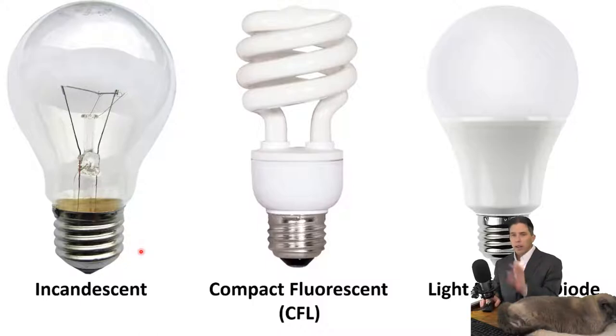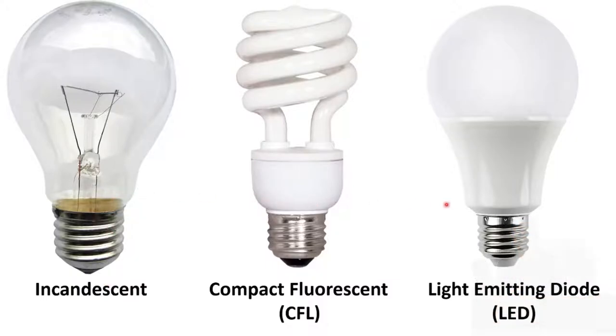So right now on the market for consumers there's three basic types of light bulbs. There's the incandescent, the compact fluorescent, and the light emitting diode also known as LEDs.